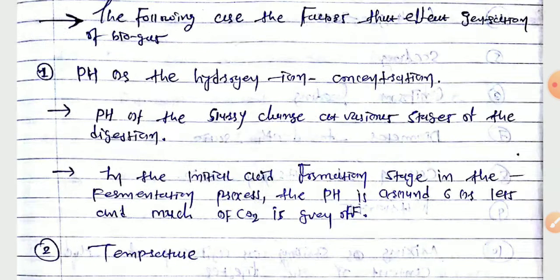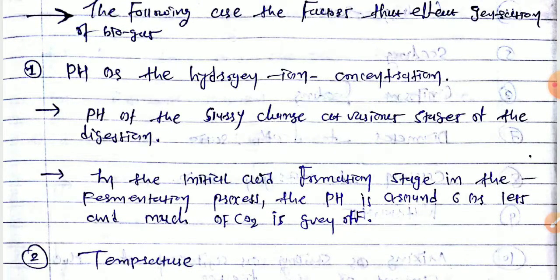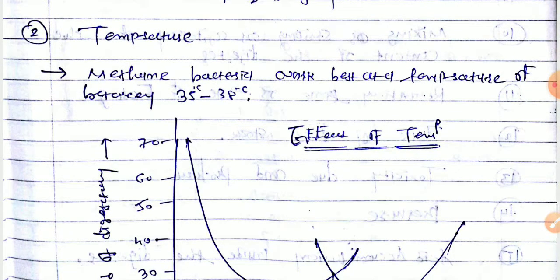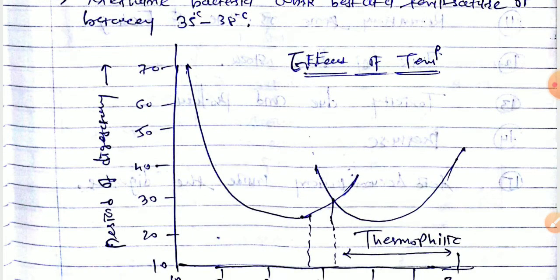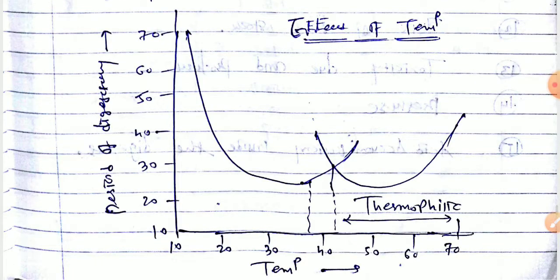To summarize so far: the first factor is pH, or hydrogen ion concentration — the pH of the slurry changes at various stages of digestion. In the initial acid formation stages of fermentation, the pH is around 6 or less. The second factor is temperature, where methane bacteria work within specific temperature ranges.